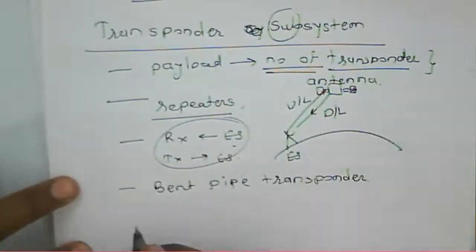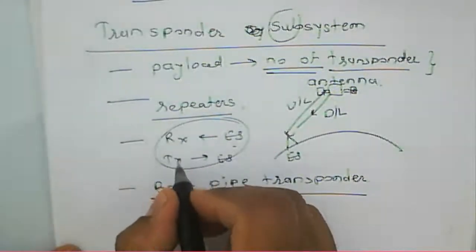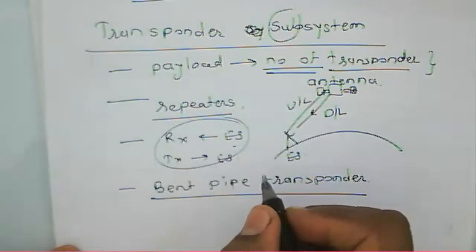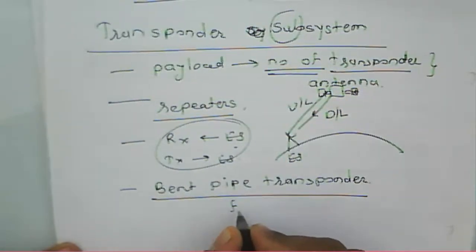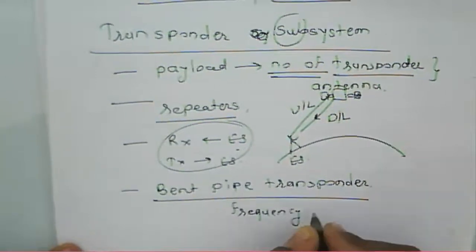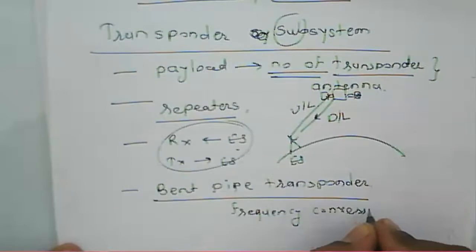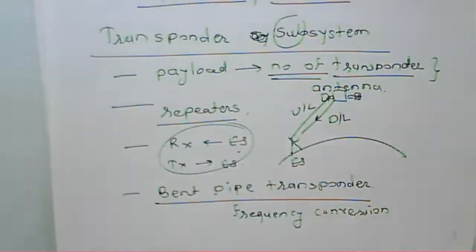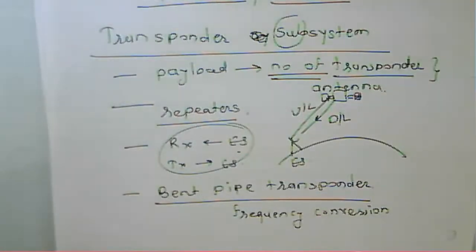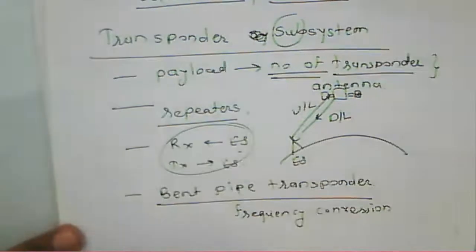In this bent pipe transponder, frequency conversion takes place — the received signal from the earth station is re-transmitted back by converting the frequency. There are two types of transponders: non-regenerative and regenerative.